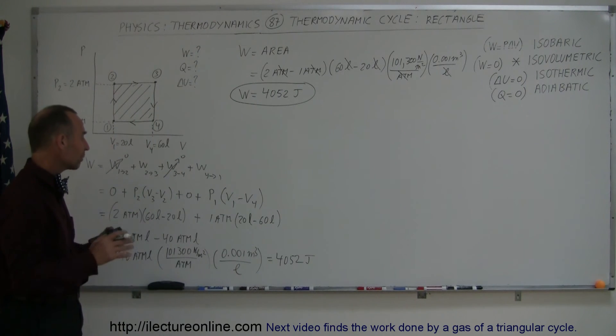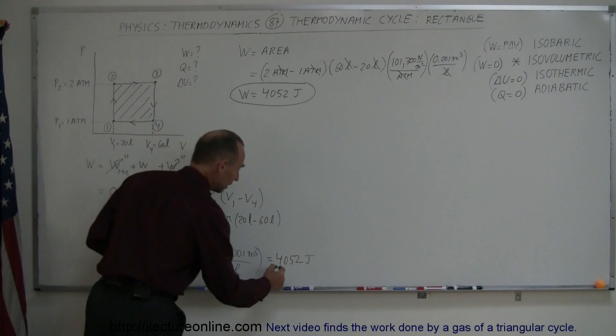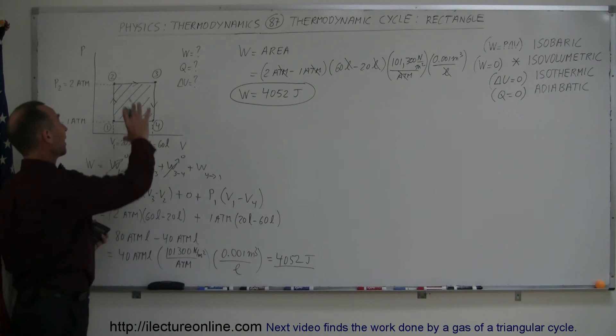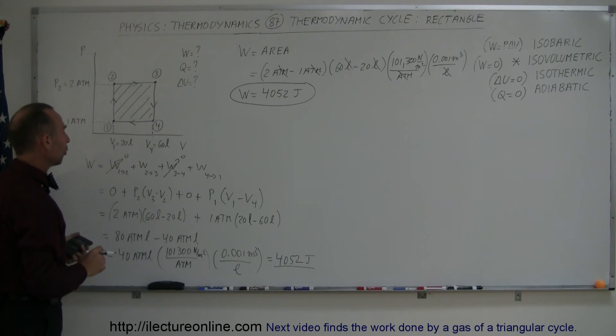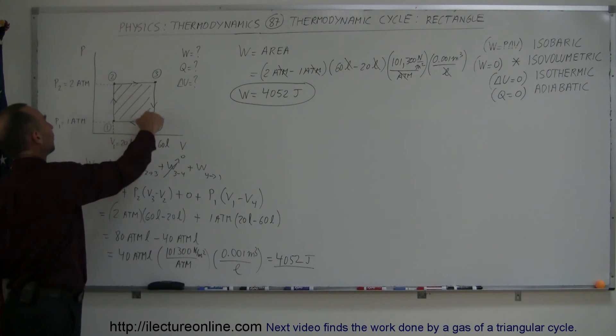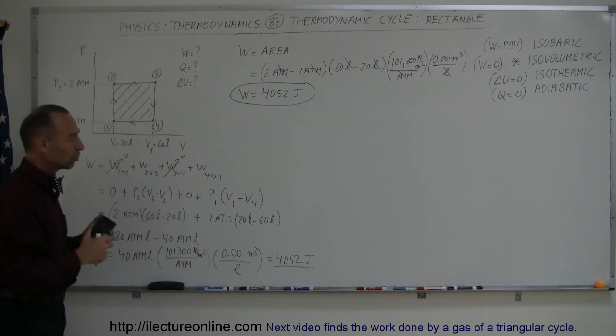Alright, so now you can see that is how you find the work done in a thermodynamic cycle. Either you find the area of the cycle, or you simply add the work done of each process within the cycle, and then you should get the same answer.